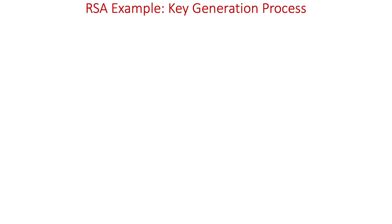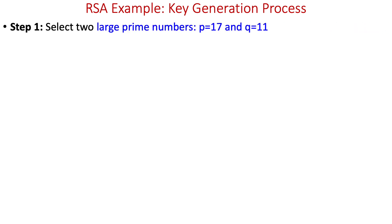Let's look at an example to understand the complete RSA encryption algorithm. In step one, we select two prime numbers: p = 17 and q = 11. Of course, these are not large prime numbers, but they simplify the calculation and make it easy to understand. In practice, these prime numbers should be very large.